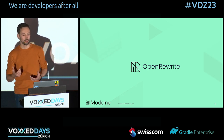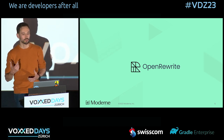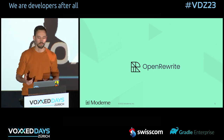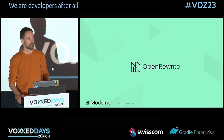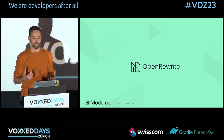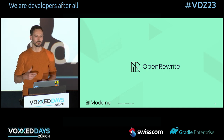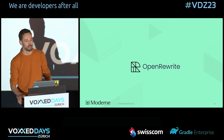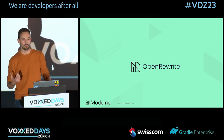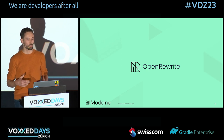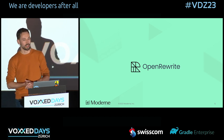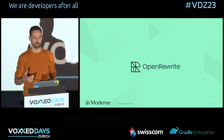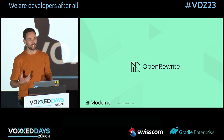Through Open Rewrite, you can now upgrade between versions of Java and Spring with a simple command. You can even migrate between frameworks, such as from JUnit to AssertJ, and even from Java EE to Spring. In this talk, I'll tell you all about Open Rewrite: how it came about, how it works, and what you can do with it. And finally, we'll briefly look at who's developing these recipes and how to apply them to open source projects.